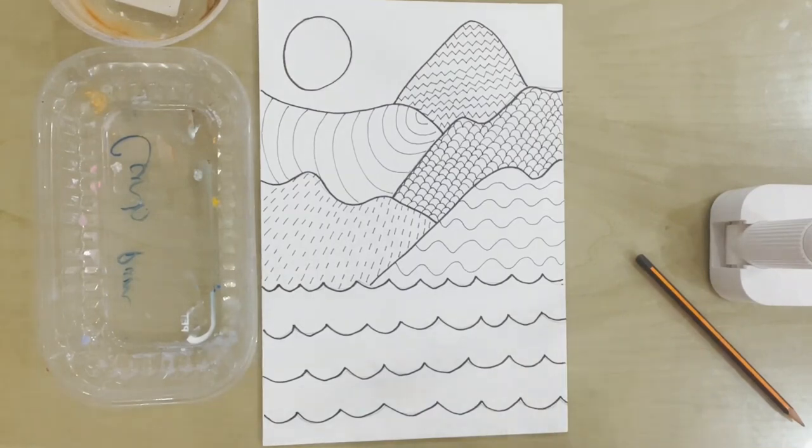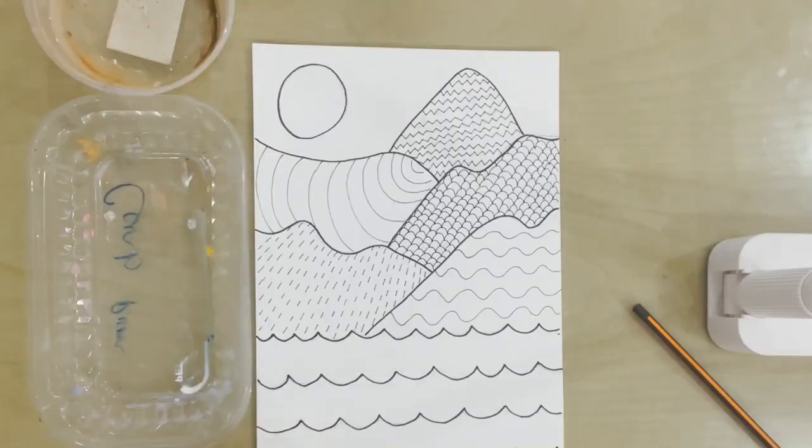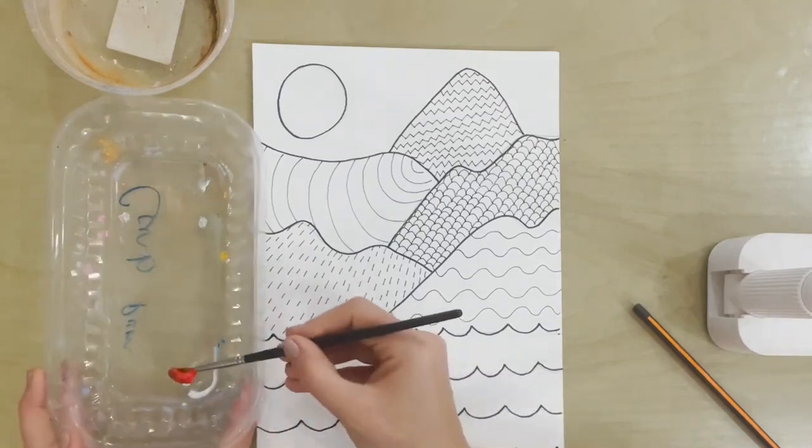So the first thing you need to do is, on your palette, you are going to put some red, some yellow, and some blue. And you don't need a lot of each colour.